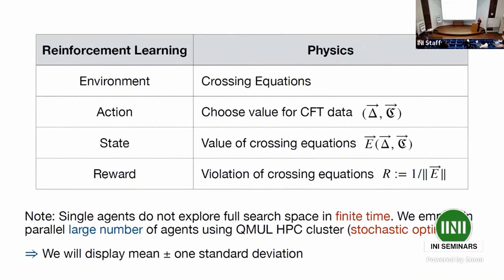At some point I was running 4,000 agents and got blacklisted from the cluster for a couple of weeks. My student produced a report showing I was among the highest resource-intensive jobs on the cluster that month.